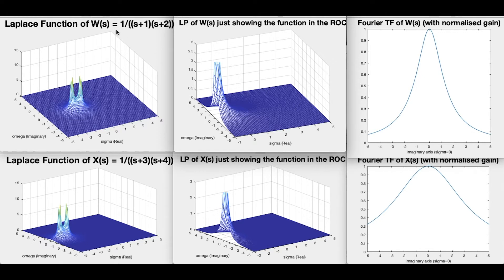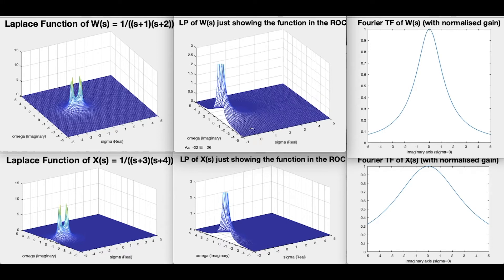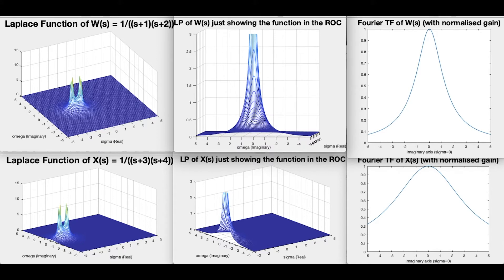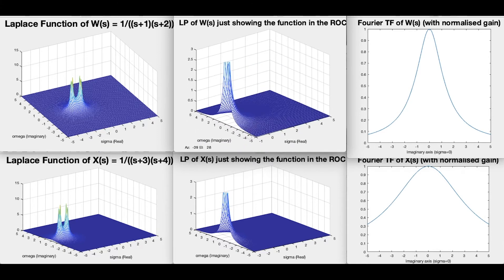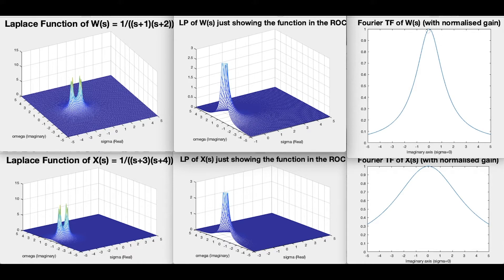If this was the impulse response of a system, then that system would act like a low-pass filter. So low frequencies would get through the filter, and high frequencies would be suppressed. I've drawn this with a normalized gain because you can always amplify your system. So even though over here in the Laplace transform, the gain of that curve there is not one at the peak, you can normalize it to be one at the peak.